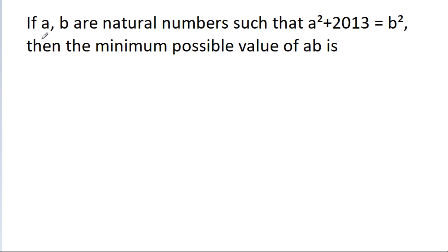In this video, we have given that A and B are actual numbers such that A squared plus 2013 is equal to B squared. Then the minimum possible value of AB is?